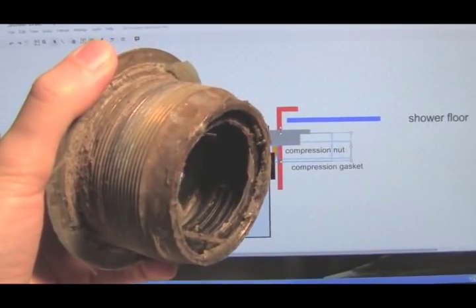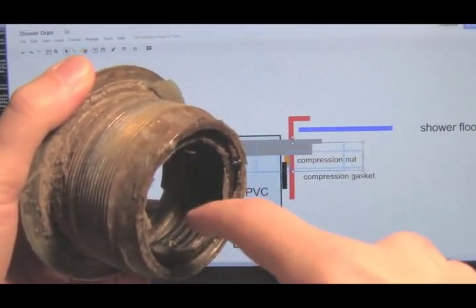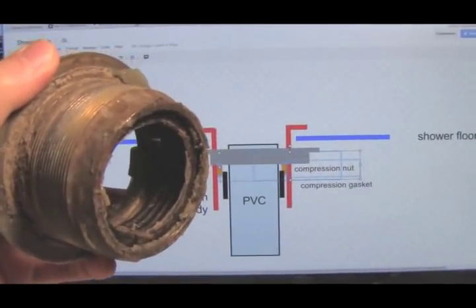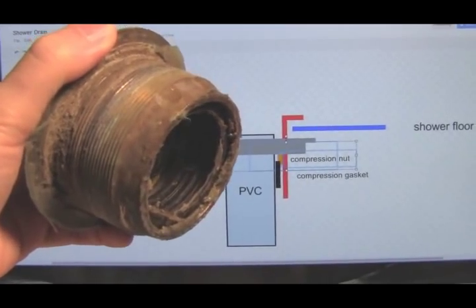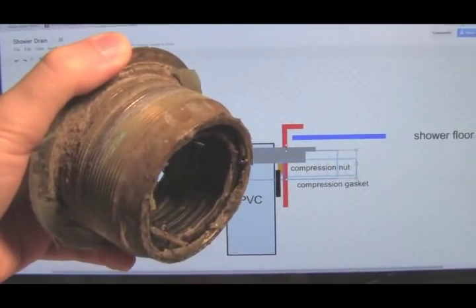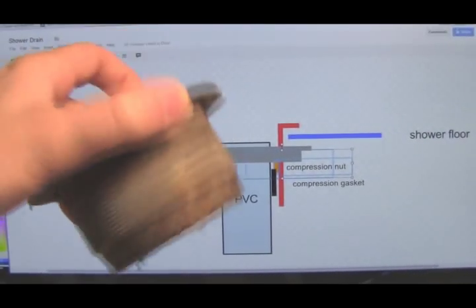So I noticed that the plumber had put silicone between this rubber compression gasket and the PVC pipe, which didn't make any sense because this type of drain isn't supposed to require any of that. So I suspected that the drain was just loose and for one reason or another might just need to be replaced.